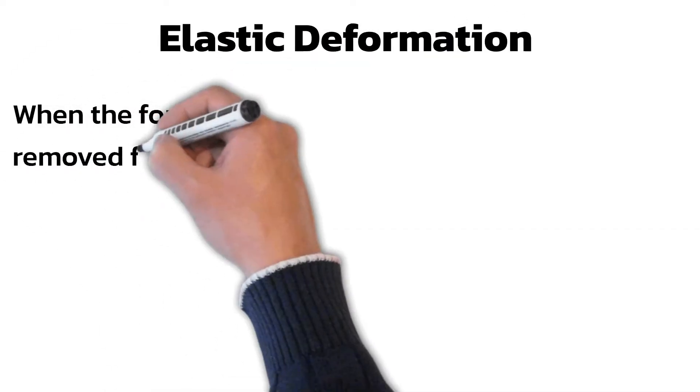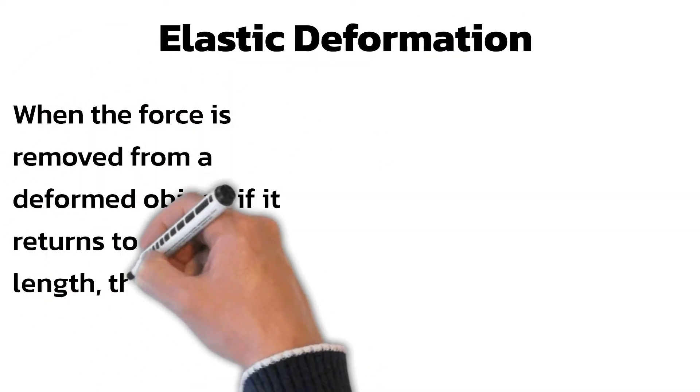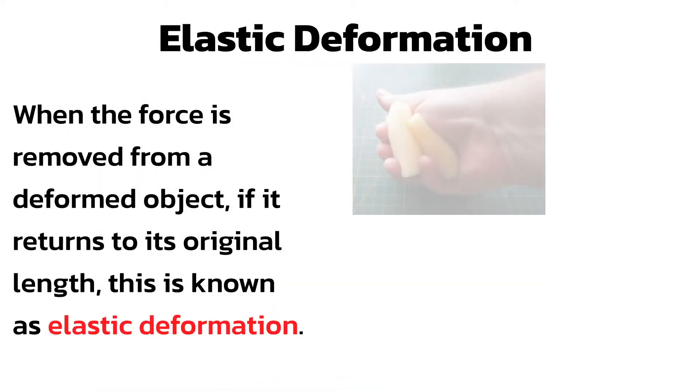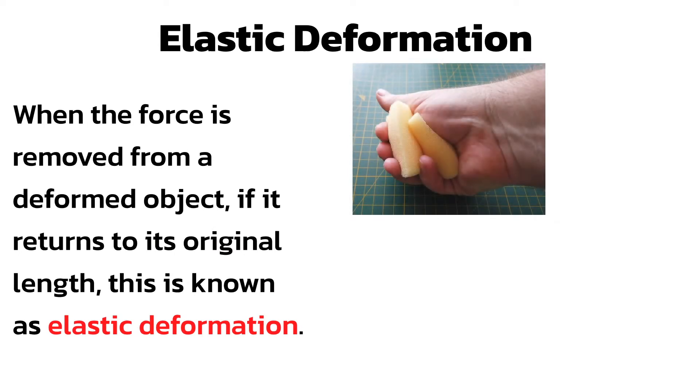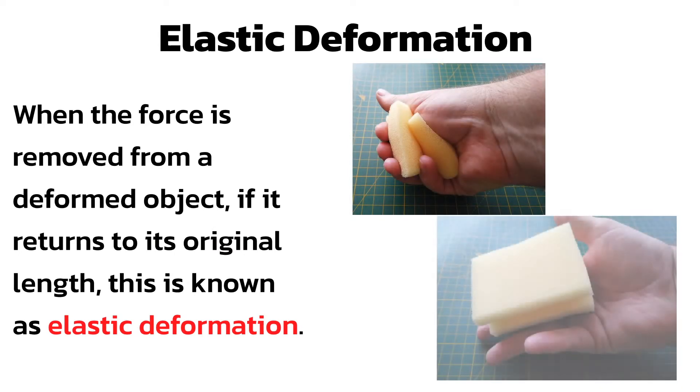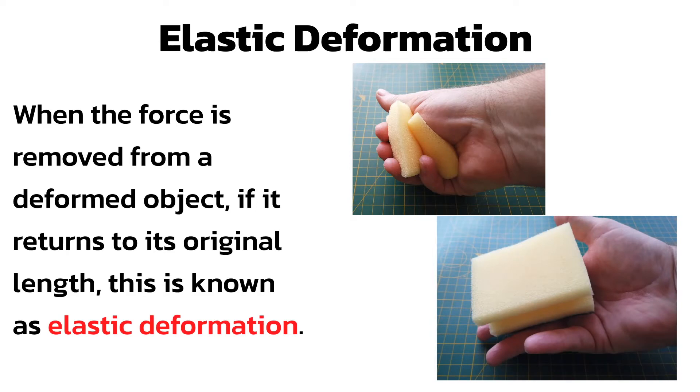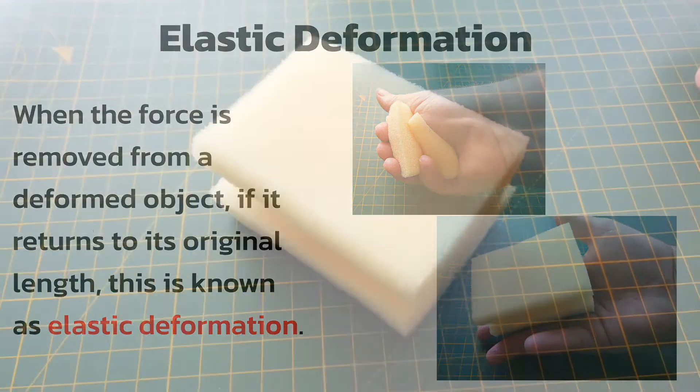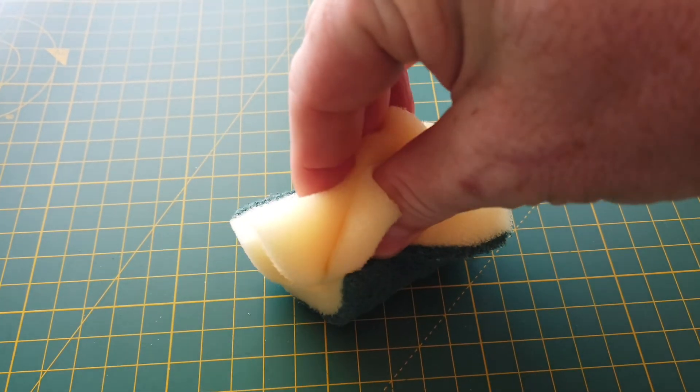When the force is removed from a deformed object, if it returns to its original shape, this is known as elastic deformation. If you squash a sponge, you apply a force to it which changes its shape. When you open your hand, the force is removed and it returns to its original shape.